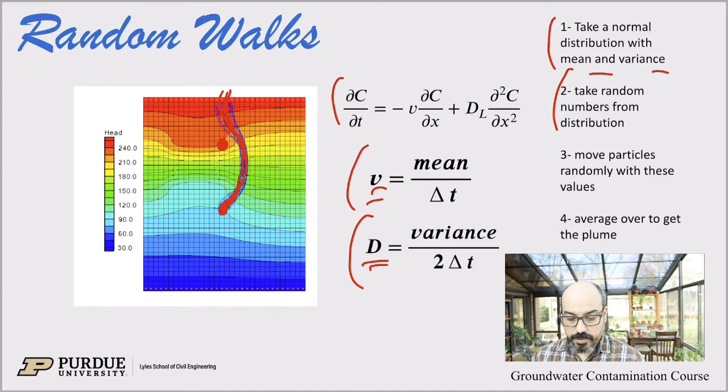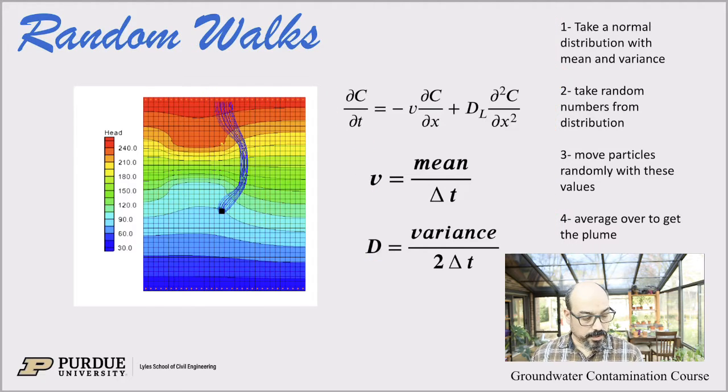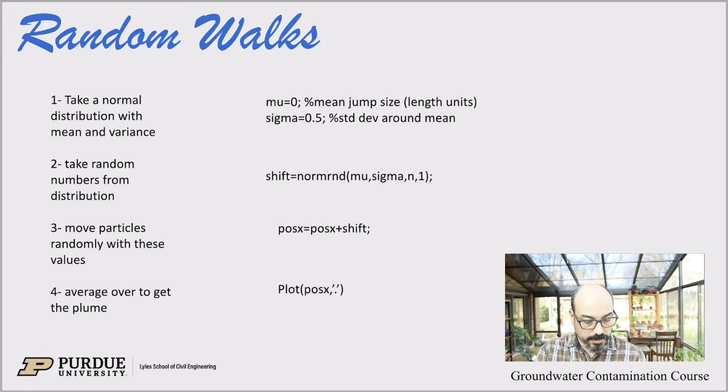So if we take a normal distribution with a mean and variance known, take random numbers from that distribution, and then we move the particles according to those random numbers. Let's say particle one is going to move some distance plus or minus some additional distance for the dispersion. So it's literally a random particle moving according to random numbers drawn from Gaussian distributions. If we average over we can get a plume, the plume of the contaminant.